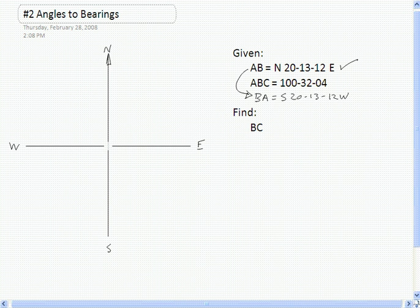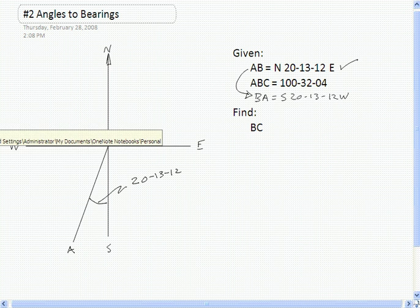We'll have B in the center, we'll come down to A. It's going to look something like that where B is in the center, come down to A. That angle is 20-13-12, and then we turn an angle up to line BC.